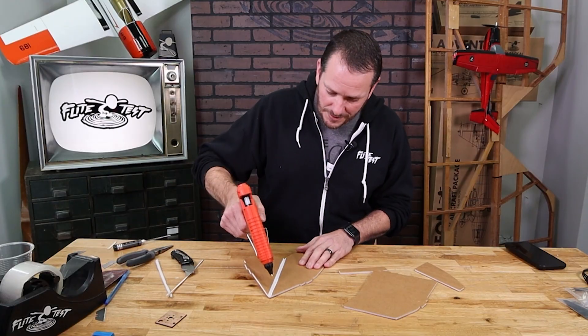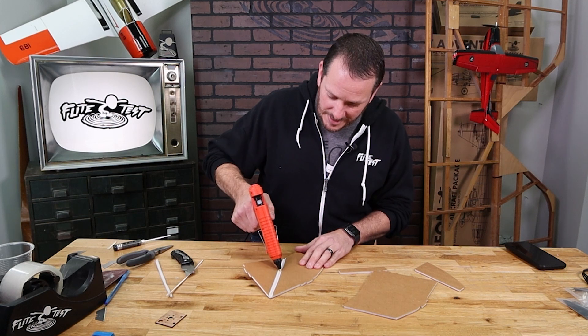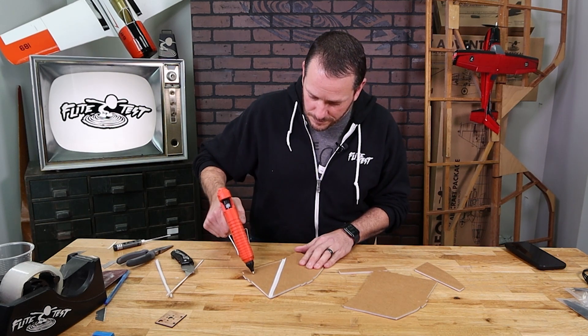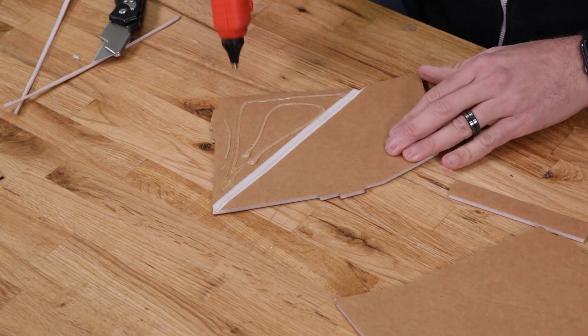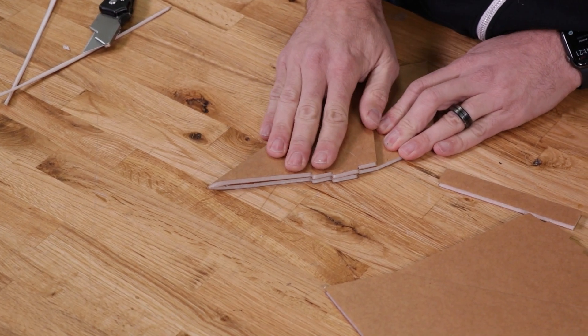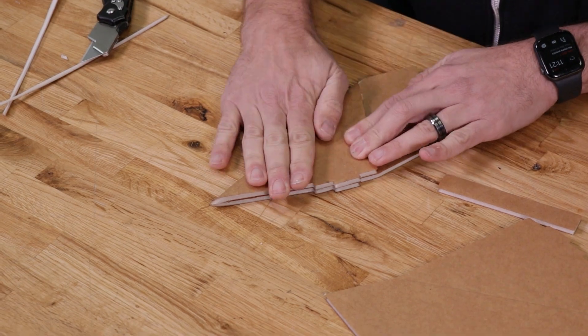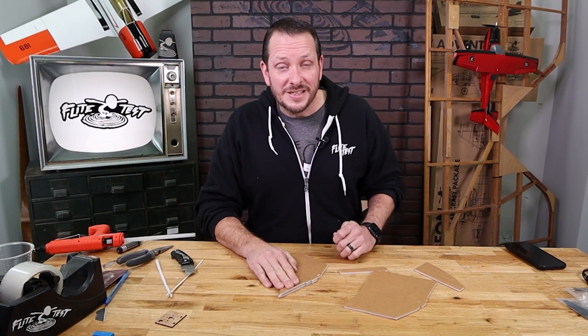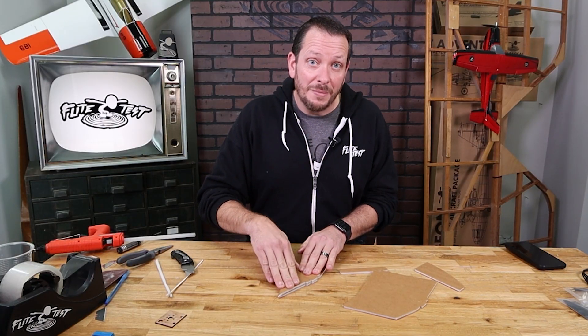Once we're happy with that, we'll apply a thick bead of glue right down the middle. And when we fold this over, we want to make sure that we line up both the tabs and the bottom surface evenly. Hold this down for at least two minutes, making sure the glue is fully dry before you release.